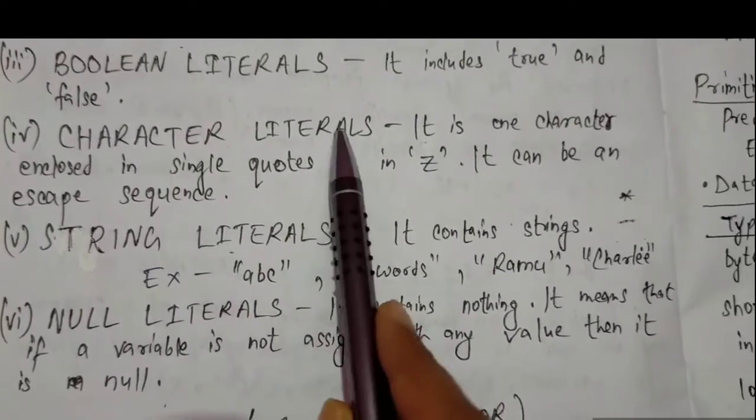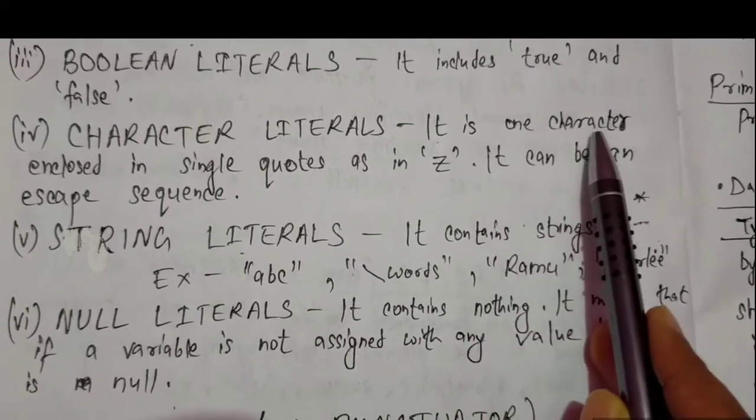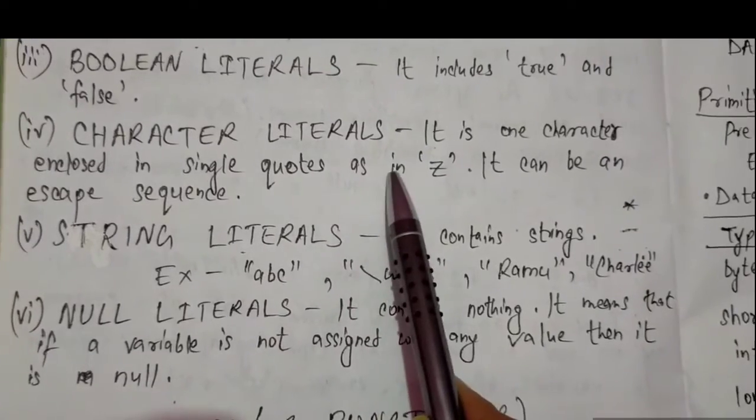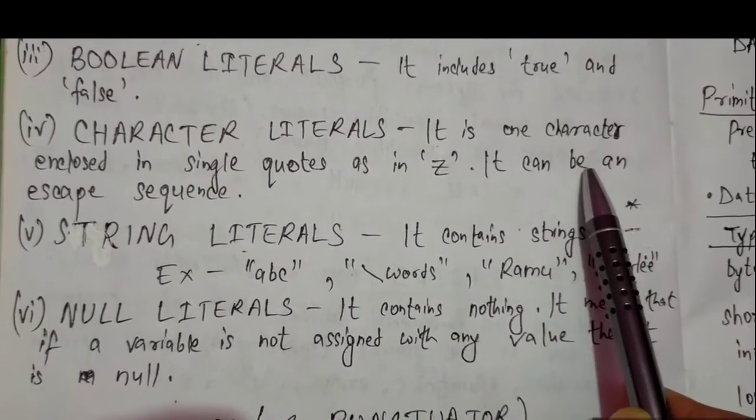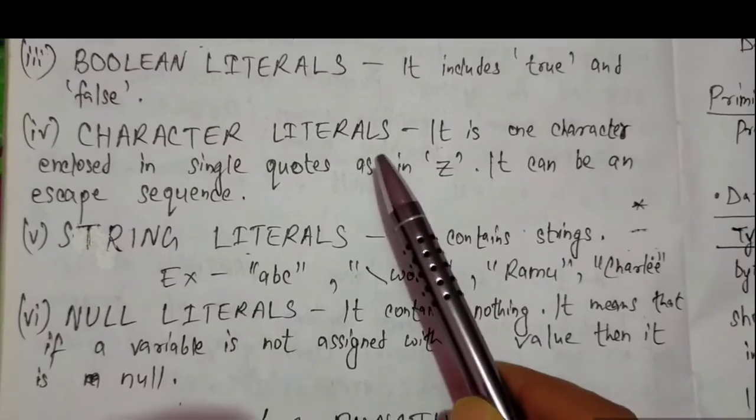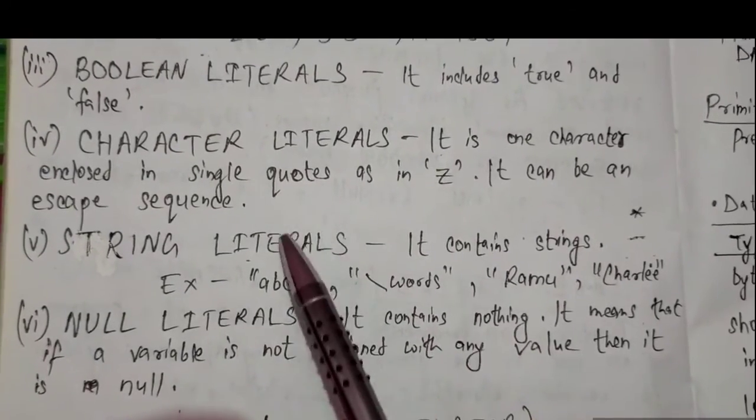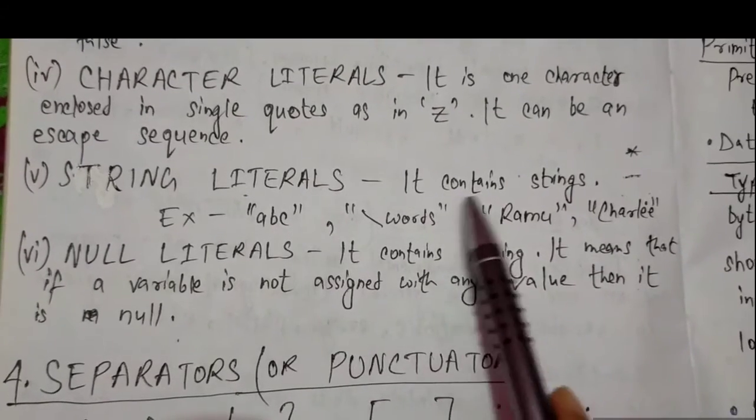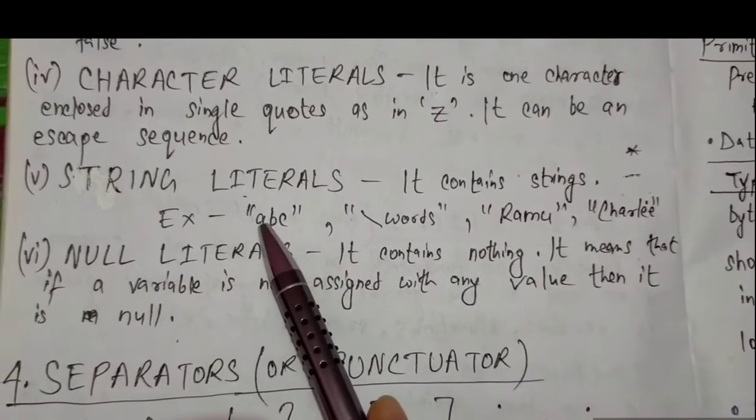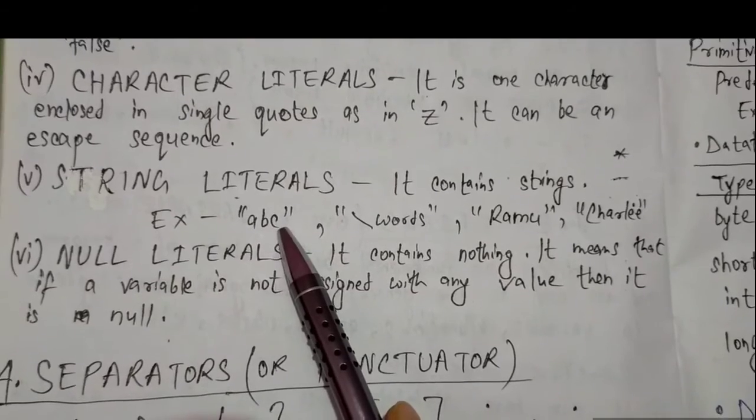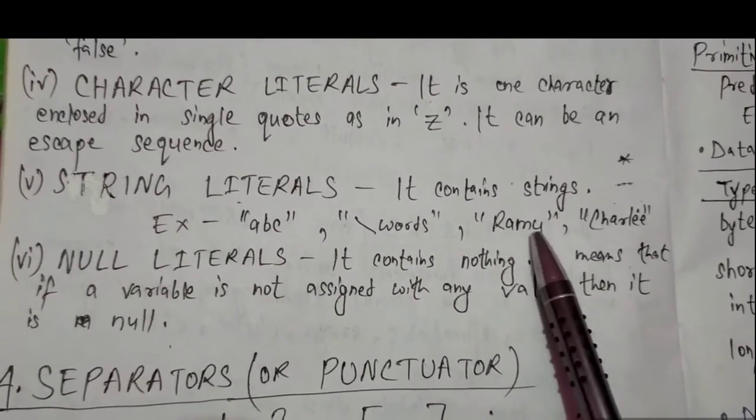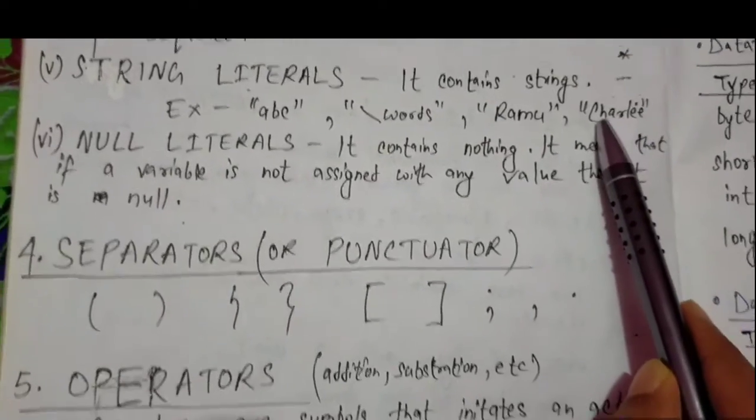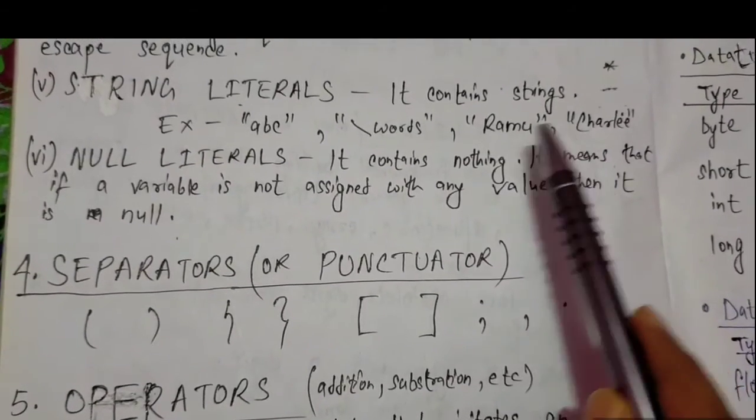Character literal can store any character or alphabets or any special symbol that are falling in characters. String literal contains strings like ABC - it is a string or a word. Ram, any name, or Charlie - this is a name containing literal.